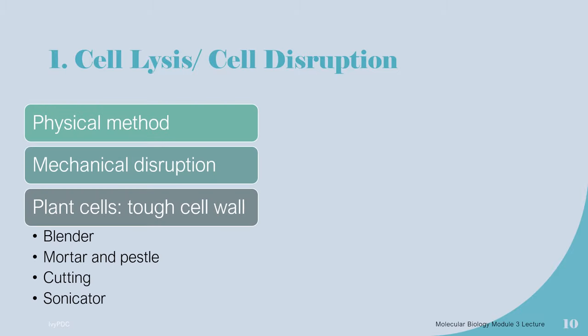The first method is the physical method by mechanical disruption. This breaks open the cells. Mechanical disruption is particularly important when using plant cells because they have a tough cell wall. Examples of mechanical disruptions include the use of a blender, mortar and pestle, cutting the specimen into smaller pieces like leaves, or the use of a sonicator.